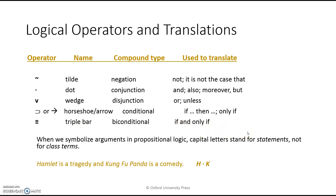When we symbolize arguments in propositional logic, capital letters aren't going to stand for class terms like in categorical logic — they're going to stand for entire statements. For example, 'Hamlet is a tragedy' is an entire statement; let's call that H. 'Kung Fu Panda is a comedy' is an entire statement; that'll be K. The 'and' gets symbolized by the dot, so the whole string gets symbolized as H dot K.